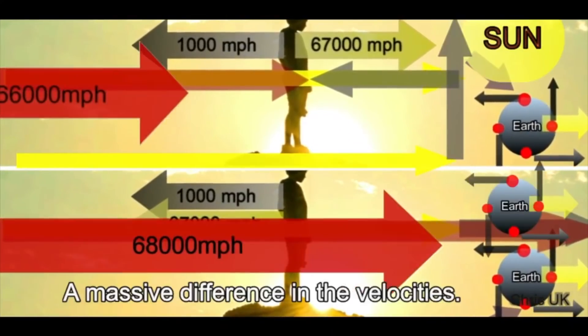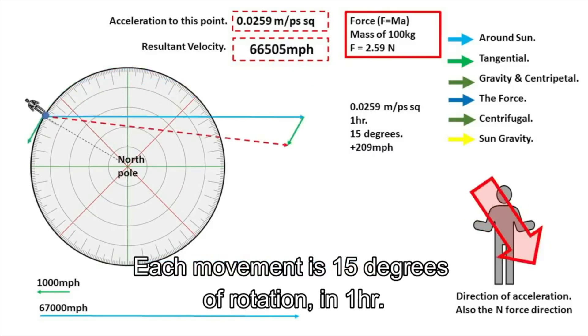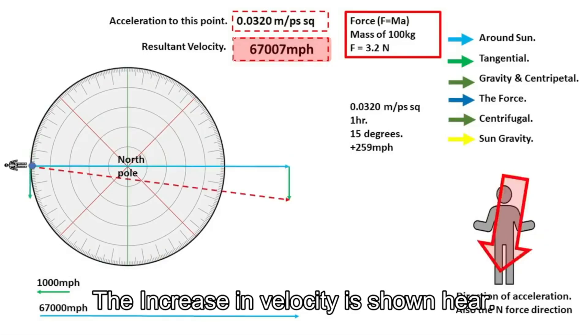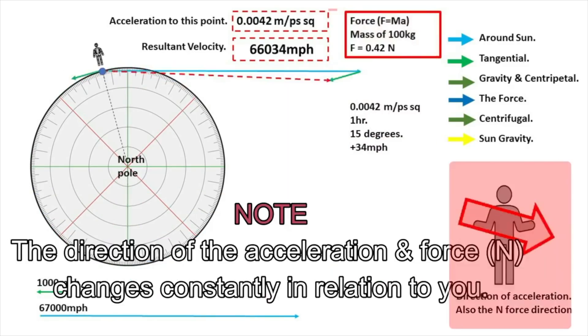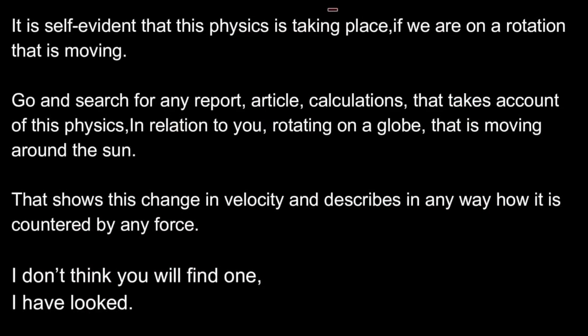At the top it's midday, at the bottom it's midnight - a massive difference in velocities. This is a graphical representation of the two constant velocity vectors; each movement is 15 degrees of rotation in one hour. See the resultant vector - the red dashed line - it changes in length as you rotate with Earth. The increase in velocity is shown here, the acceleration value from point to point, the Newton force value for 100 kilograms. Note the direction of the acceleration and force changes constantly in relation to you. It's self-evident that this physics is taking place. Go and search for any report, article, or calculations that takes account of this physics in relation to you rotating on a globe that is moving around the sun - I don't think you will find one.